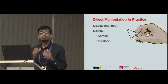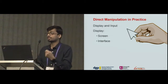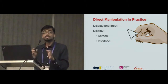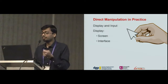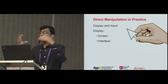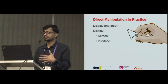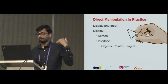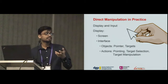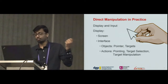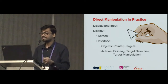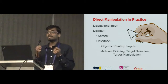In practice, how do these principles translate? What do we need for direct manipulation to actually work? We obviously need a visual display and an input device. We can think of the display as a combination of the screen and the visual interface — the screen is just a cluster of pixels, and the interface combines these pixels to enable objects. The objects could be the pointer and the targets. When we use the input device to interact with these objects, that results in actions — the basic ones being pointing, target selection, and target manipulation, which is basically drag and drop. These are the basics that make direct manipulation work, and we have done this really well for visual displays. It just works.